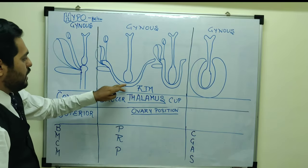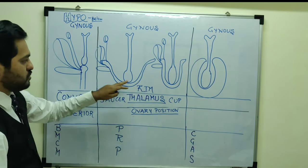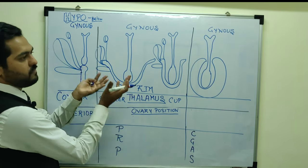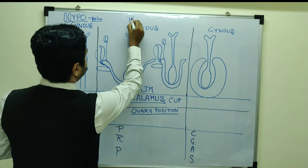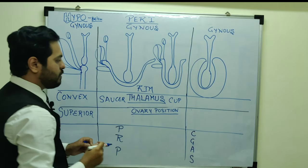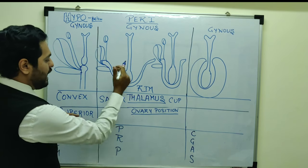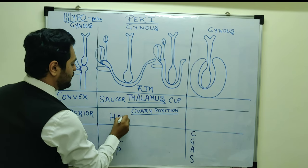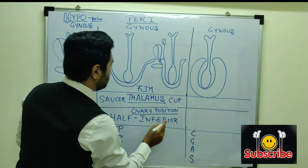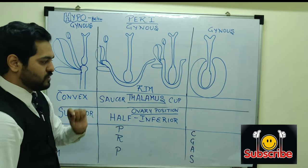So whenever the thalamus is of saucer or cup shape, the position of the remaining whorls in comparison to ovary is called half-inferior. This is seen in a perigynous flower, where the thalamus has a cup or saucer shape representation.